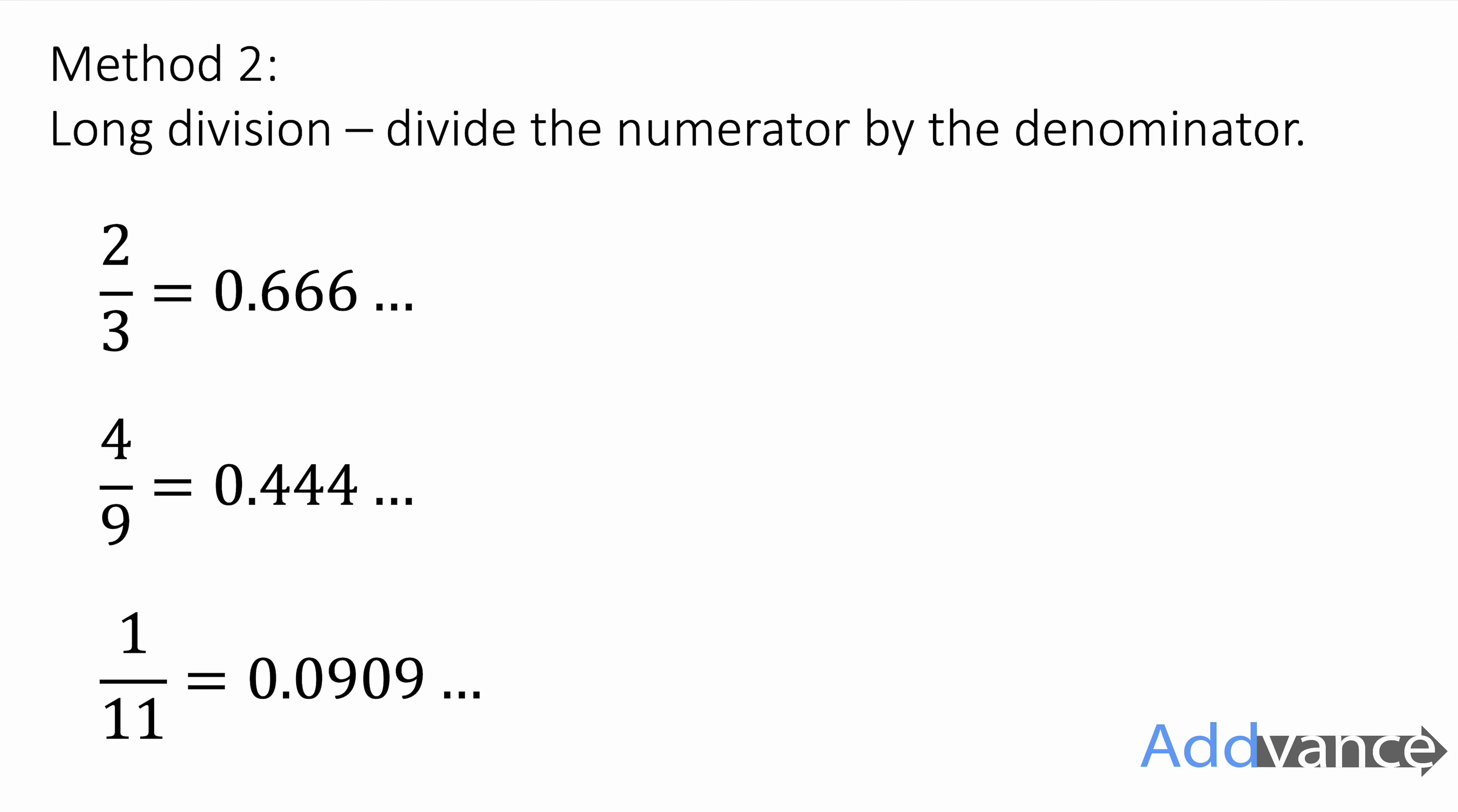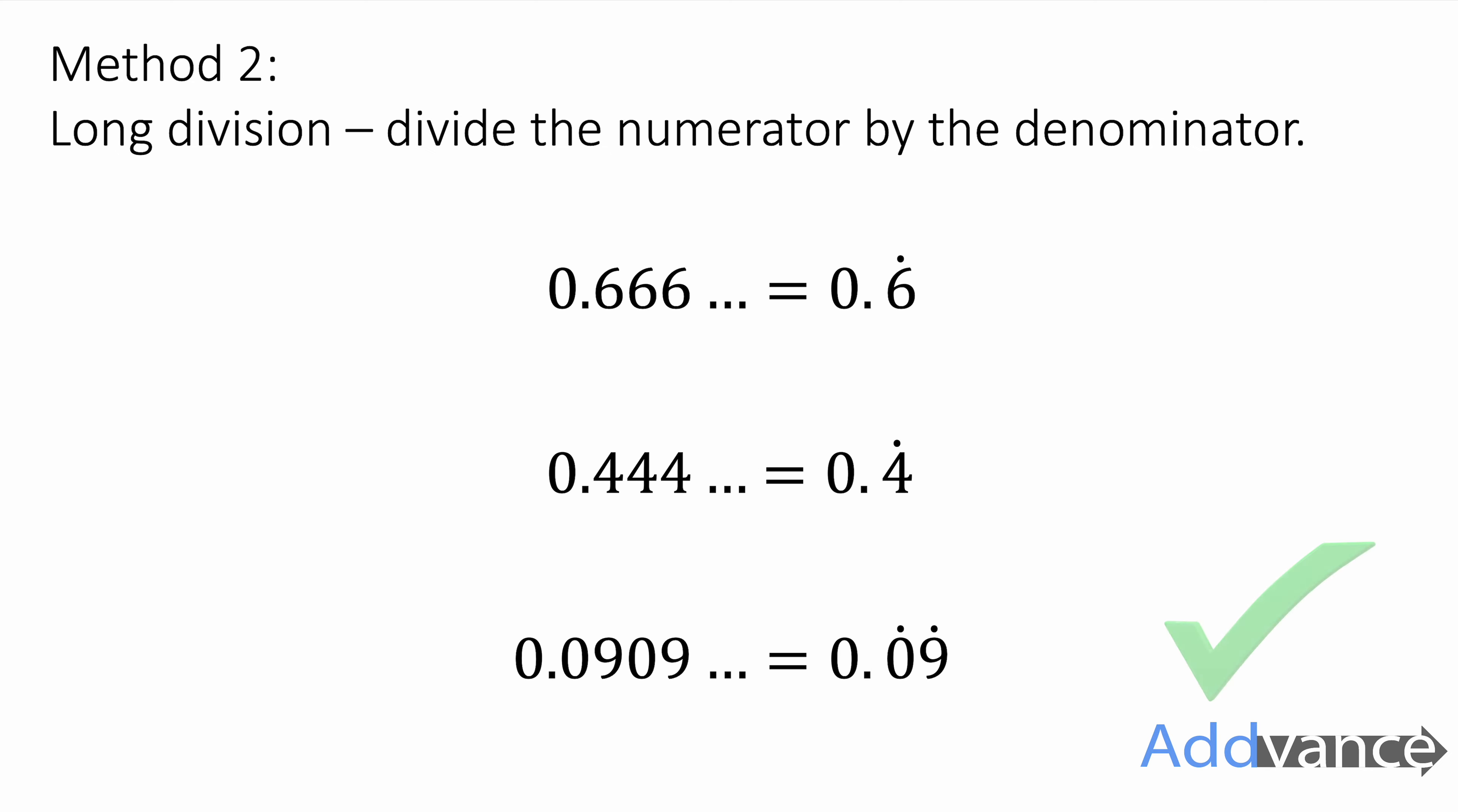Now, these are what we call recurring decimals. They continue in the same pattern forever. And we can write it in a simpler way. 0.666 is 0.6 recurring, and we put a dot above the 6 to show it's recurring. 0.909 recurs. We put a dot above the 0 and a dot above the 9 to show that they recur.